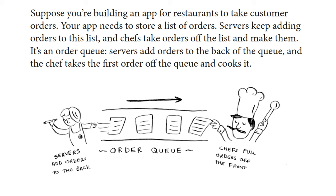Last lecture we left off with a thought exercise where you are supposed to build an app which takes charge in taking orders, and the chefs can simply pull out the first order that comes out of it and cook it. This app needs to store that list of orders, or that queue of orders. The question now is which data structure is more appropriate: an array, which is more efficient when accessing elements, or a list, where it's more efficient to write down elements.